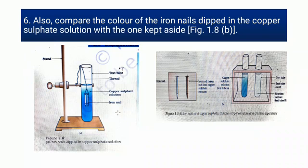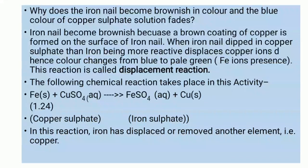The iron nails become brown in color due to the presence of copper solid on their surface. A brown coating of copper is formed on the surface of the iron nail.